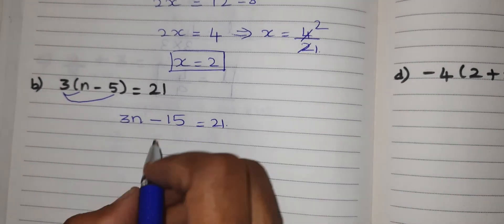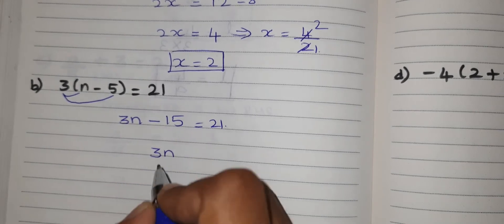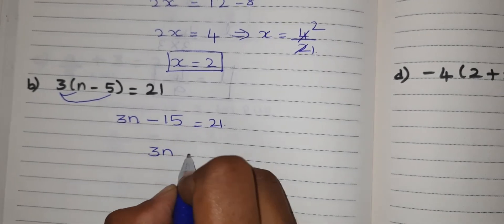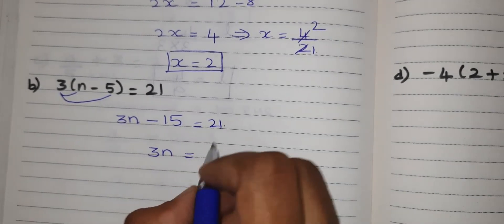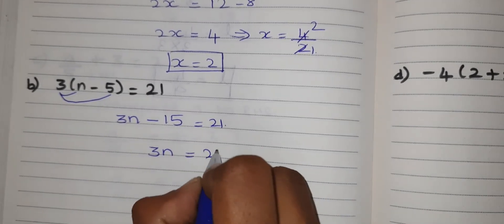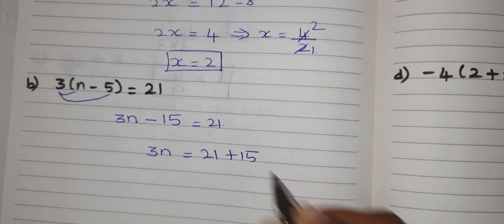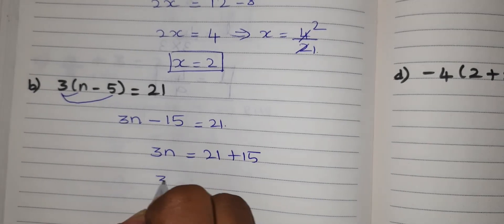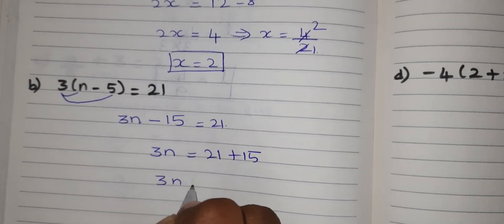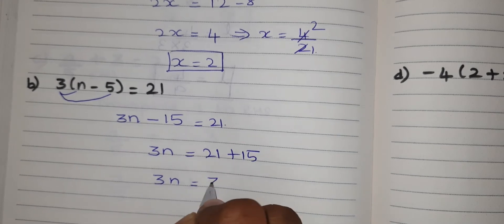Use the transposing method. When minus 15 goes to the RHS side, it will become plus 15. So 21 plus 15 equal to 36.